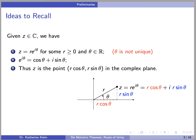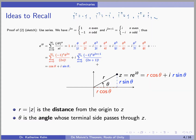Thus z is the point (r·cos(θ), r·sin(θ)) in the complex plane. The absolute value of z is the number r, which is the distance from the origin to the point z on the complex plane. And θ is the angle whose terminal side passes through z.